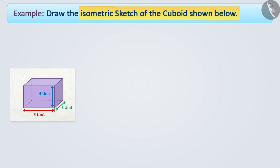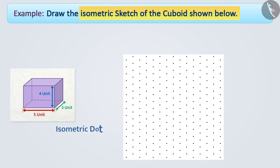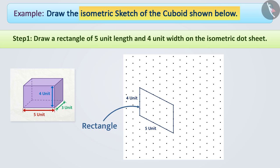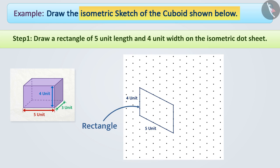We will take an isometric dots sheet to draw an isometric sketch. Step 1: First of all, we will draw a rectangle of 5 unit length and 4 unit width on the isometric dot sheet.